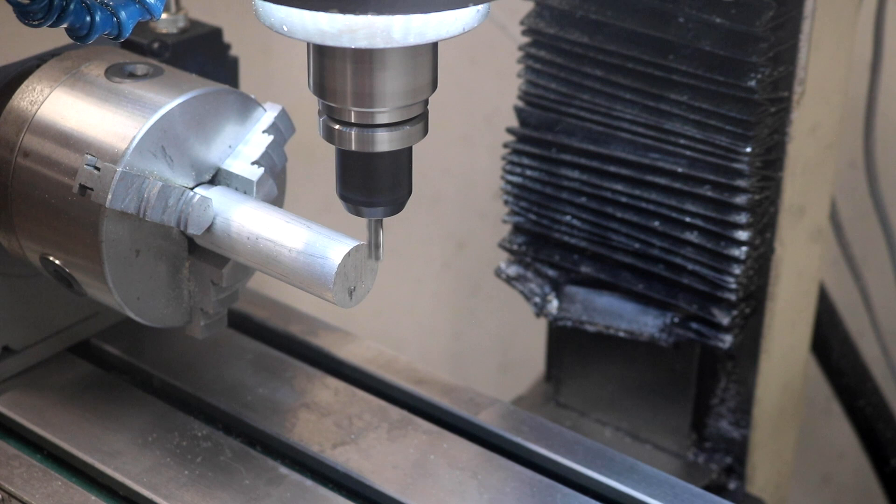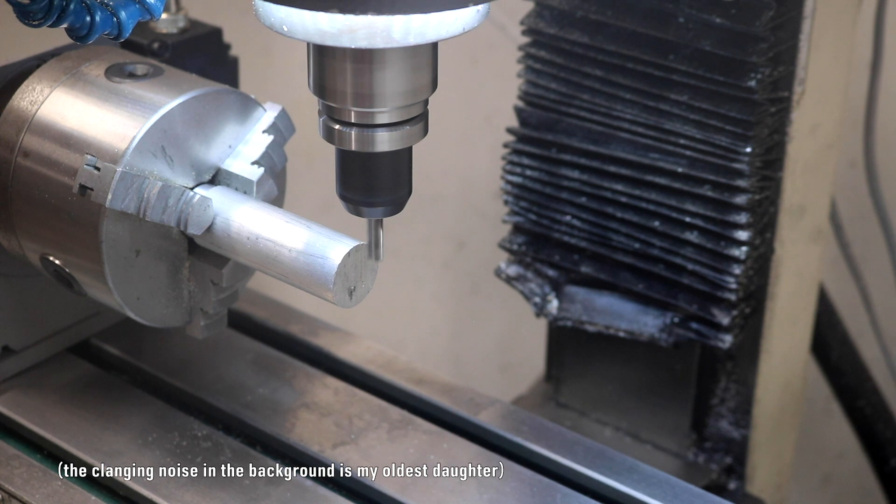In the last video, I built this fourth axis for my milling machine. It's a rotary axis. I didn't get a chance to show it making chips in that video, so that's what this video is about.